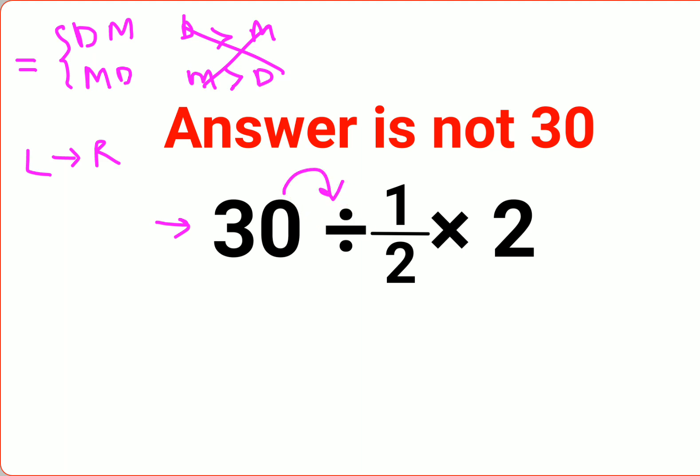So 30 divided by half. In case of division, you will always follow the rule of KCF, where K stands for keeping the first number as it is, C stands for changing the division sign to multiplication...